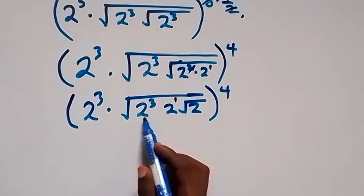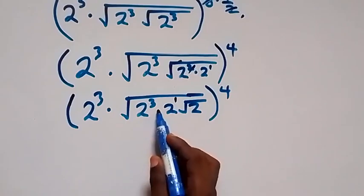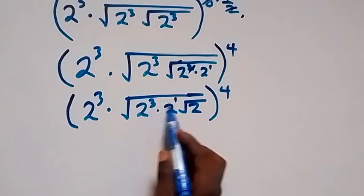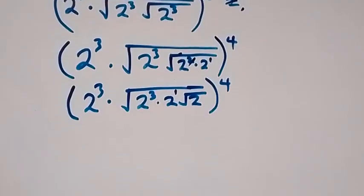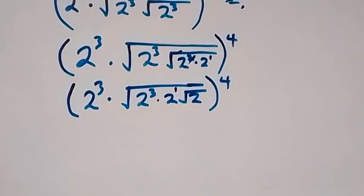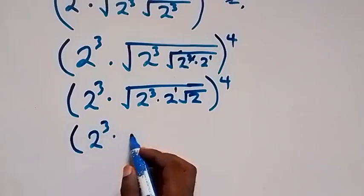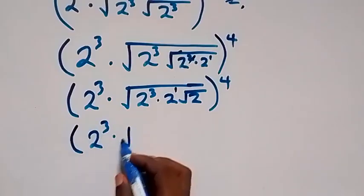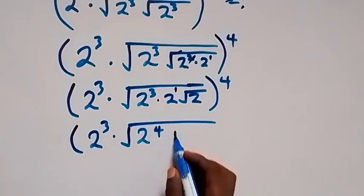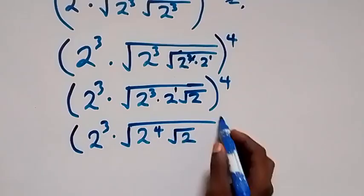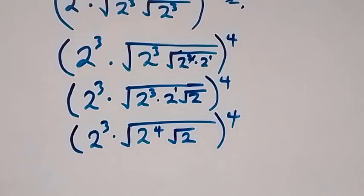Then all raised to power four. From here, applying the law of indices — since we are multiplying, we add the powers together. That is three plus one equals four. So therefore we can write this as two raised to power three times square root of two raised to power four, then root two, then all raised to power four.